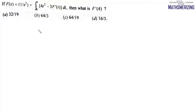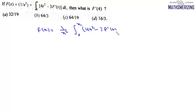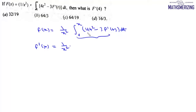Now here the question is we are given a function f(x) which is 1 upon x² times this integral from 1 to x of (4t² − 3) f'(t) dt. We need to find the value of f'(4). So we'll differentiate it. We'll write f'(x), and it will involve 1 upon x². In this case the limits are variable and here it is a function of t, so there is no parameter x — we'll use the Leibnitz integral rule.